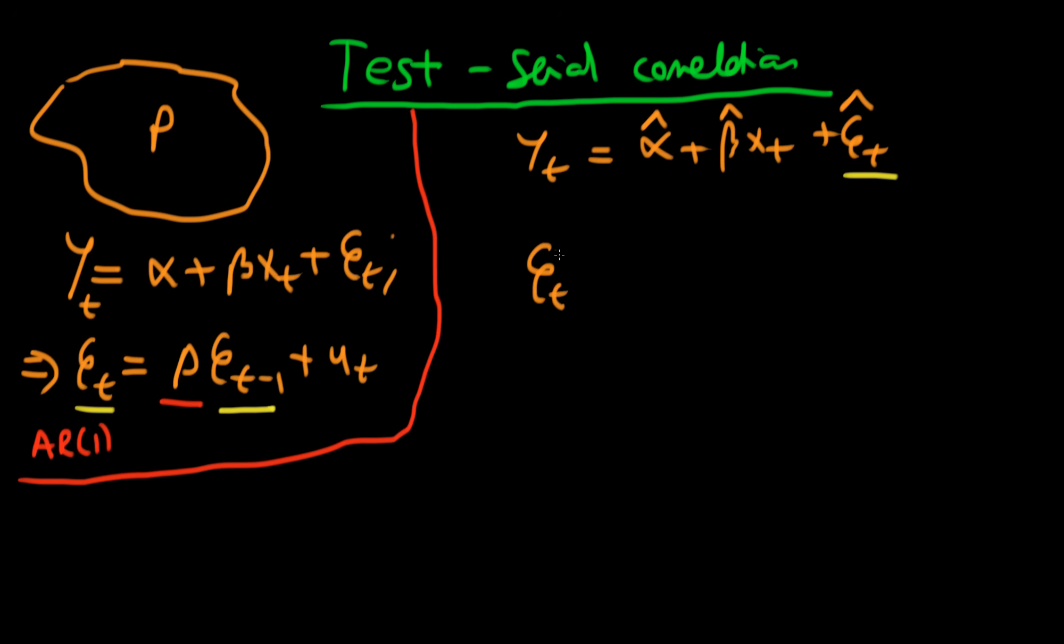Our actual second regression is: regress ê_t on a constant plus delta one times ê_{t-1}. We're regressing our residuals at period t on our residuals at period t minus one. If we test for significance of delta one using a t-statistic, then essentially we're testing whether rho is actually different from zero in the population.